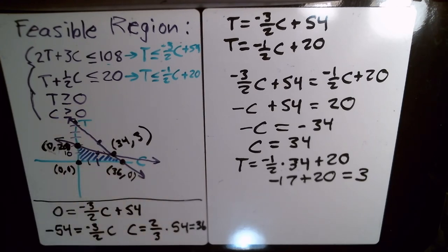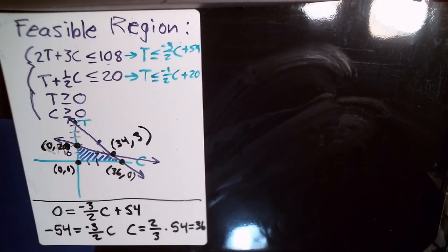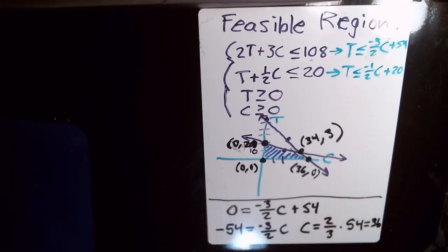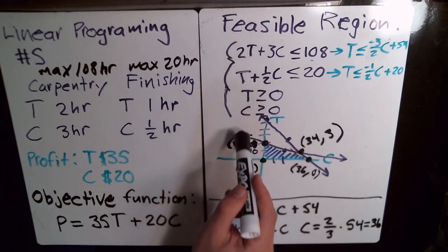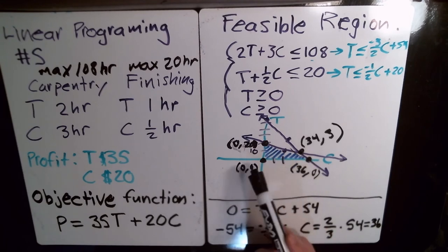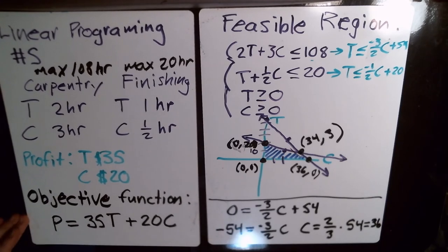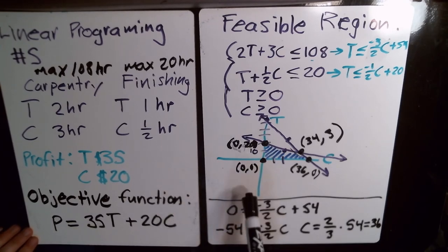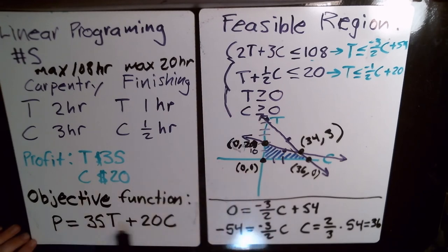We found those vertices by figuring out where lines intersected — essentially solving systems of equations. Now, looking back at what we're doing: we have the objective function, the feasible region, and the vertices. The maximum of the objective function must occur at one of the vertices, so we just plug each vertex in and check where the profit is biggest.